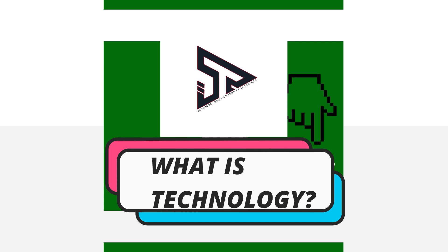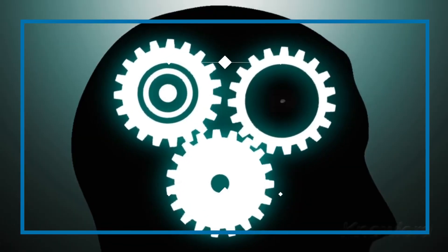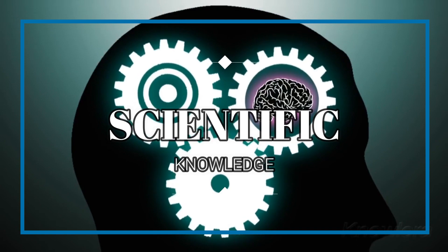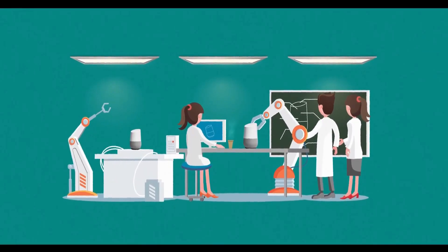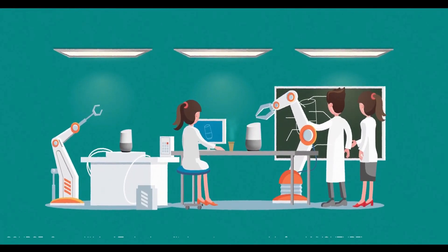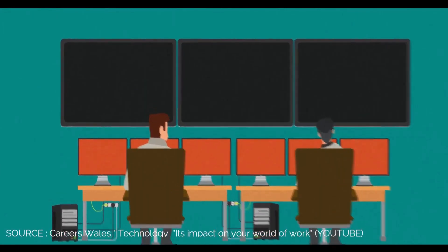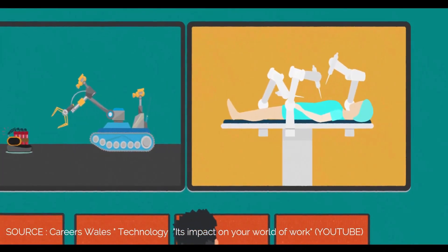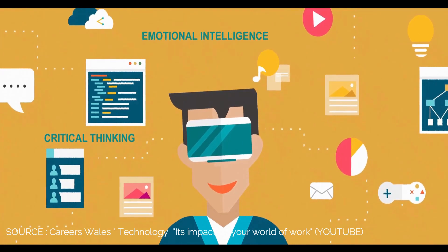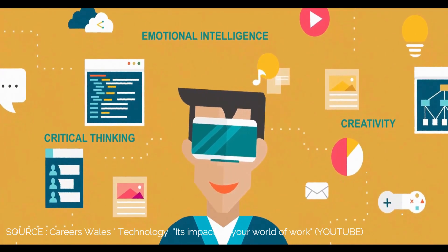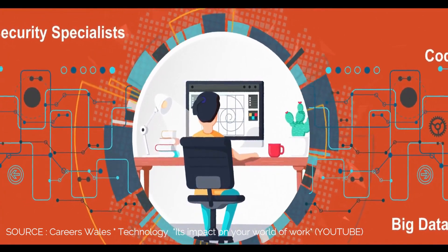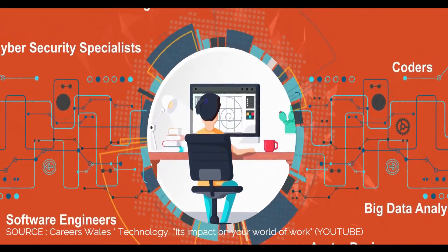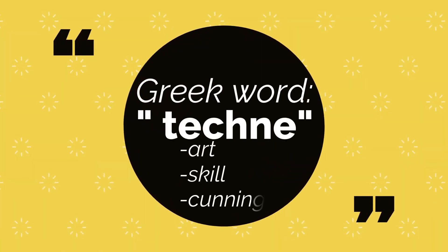What is technology? Technology is the application of scientific knowledge for practical purposes, especially in industry — including machinery and equipment developed from that knowledge. It is the branch of knowledge dealing with engineering or applied sciences. More fully, technology is the application of scientific knowledge, laws, and principles to produce services, materials, tools, and machines aimed at solving real-world problems. The word comes from the Greek term 'techne,' meaning art, skill, or cunning of hand.